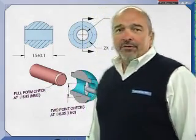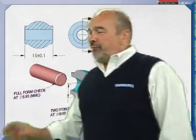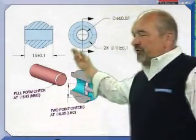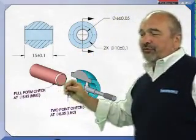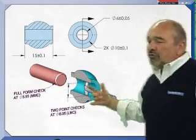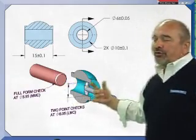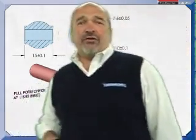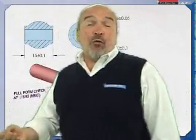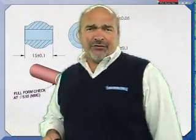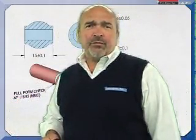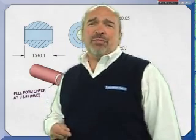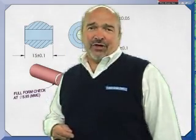To measure per rule one, you make a full form check at the maximum material condition. For instance, for this hole that would be at its smallest size, or 595, and then local checks to make sure it isn't too big. If it passes these checks, then the feature form must be within the limits of size. In other words, the form of the feature is dependent on the limits of size.